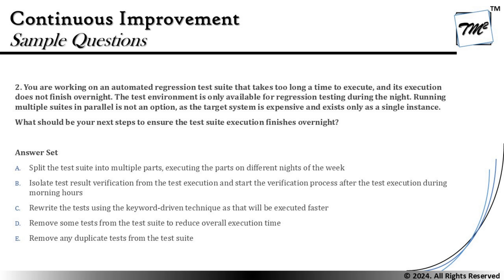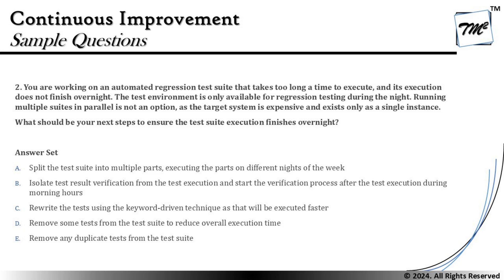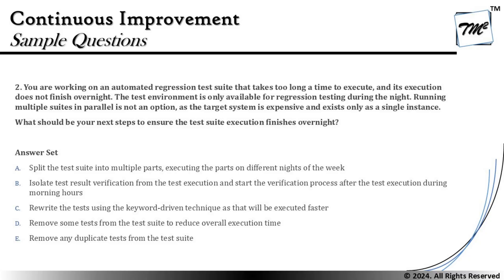Option B says: isolate test result verification from the test execution and start the verification process after test execution during morning hours. Morning hours is not a recommended option. Test result verification cannot be isolated from the test execution process because a test solution consists of many components as part of it. If we are separating them, we are trying to do that independently, which might not be efficient. And second, during morning hours my system would be engaged and I may not be performing my regular work. So B goes wrong on multiple counts.